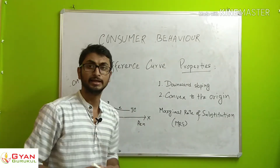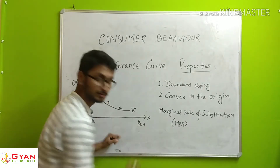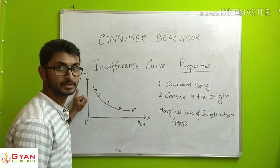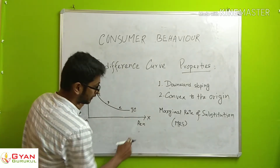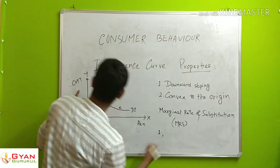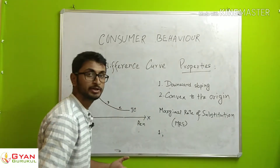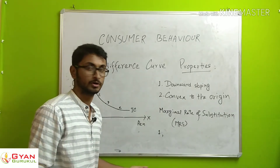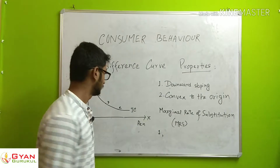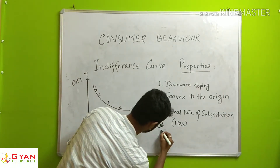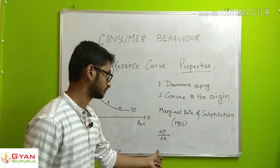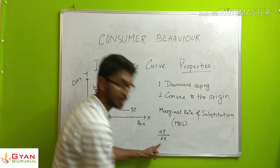To gain an additional one unit of Commodity X, we have to give up some units of Commodity Y. This is the marginal rate of substitution. MRS equals change in Y divided by change in X.